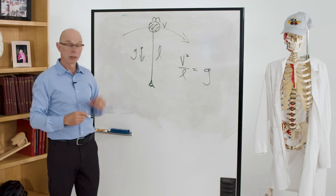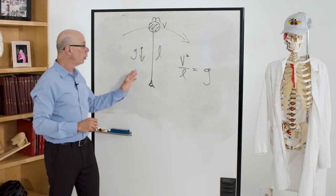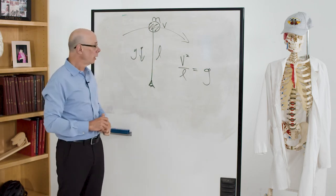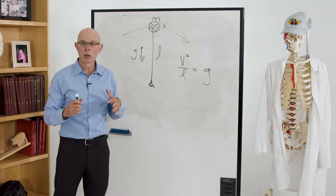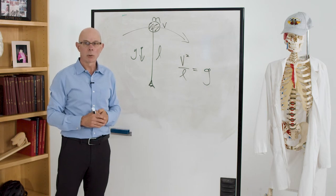If V gets bigger, then you will be actually flying off the ground. If L gets smaller, then the peak speed at which you can walk is also lower.